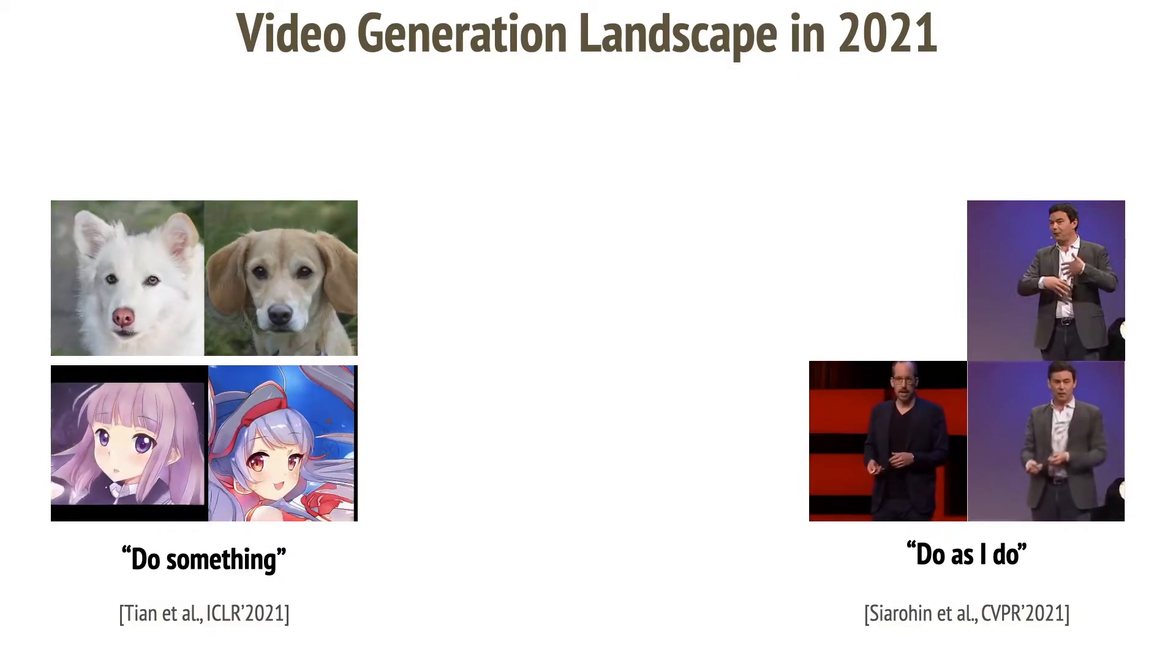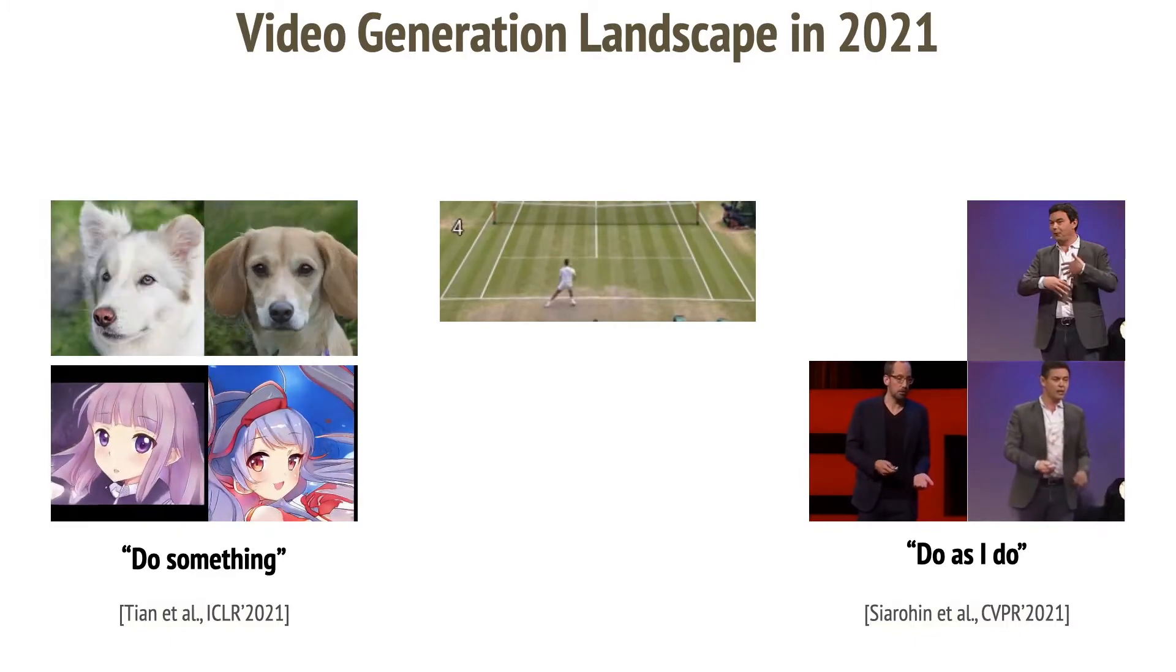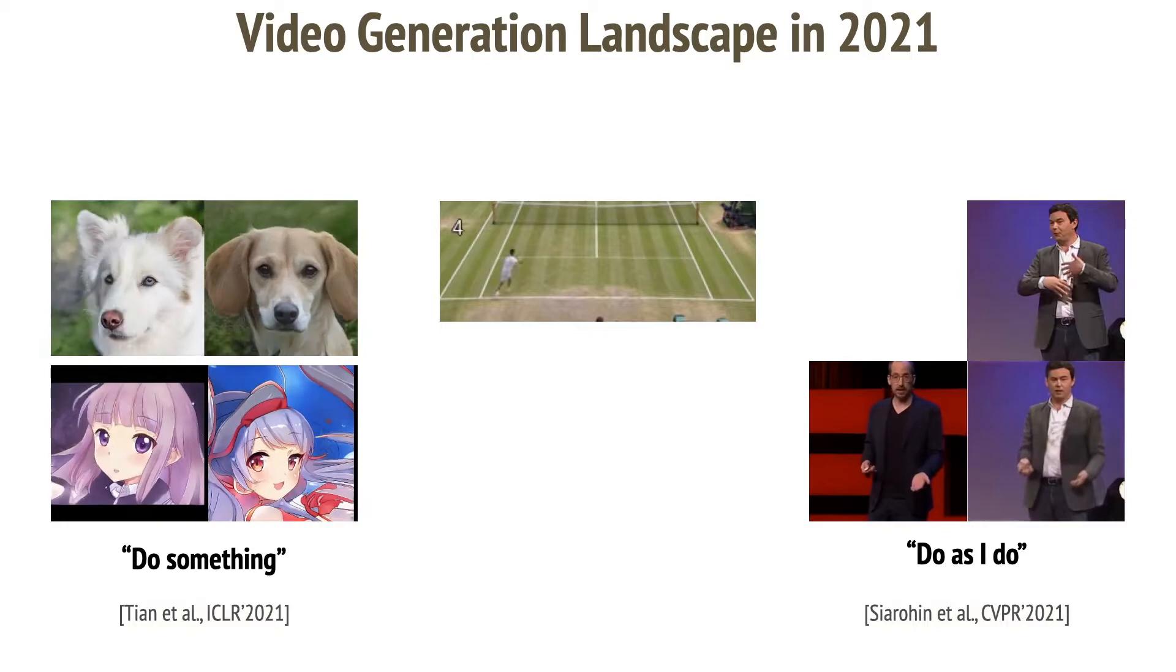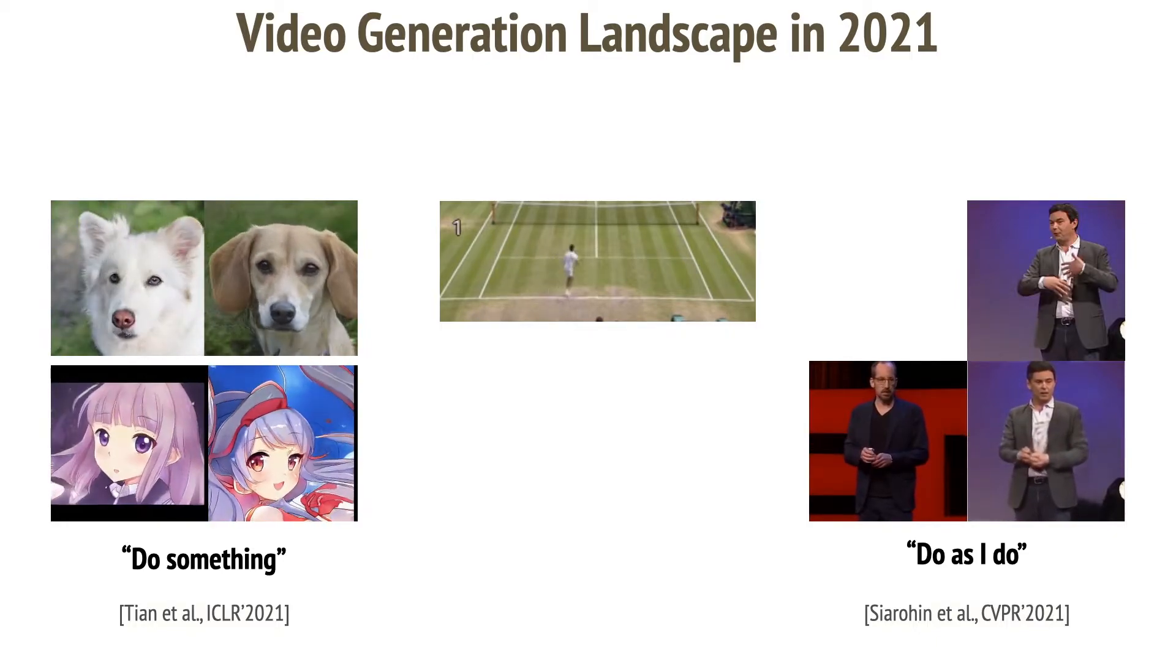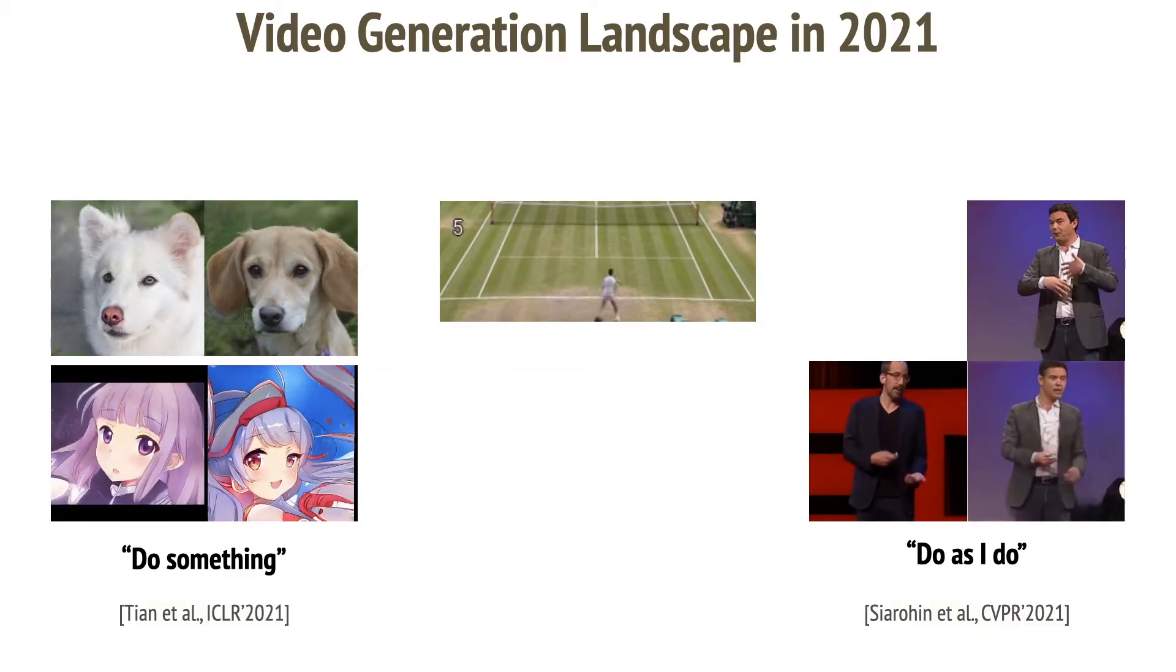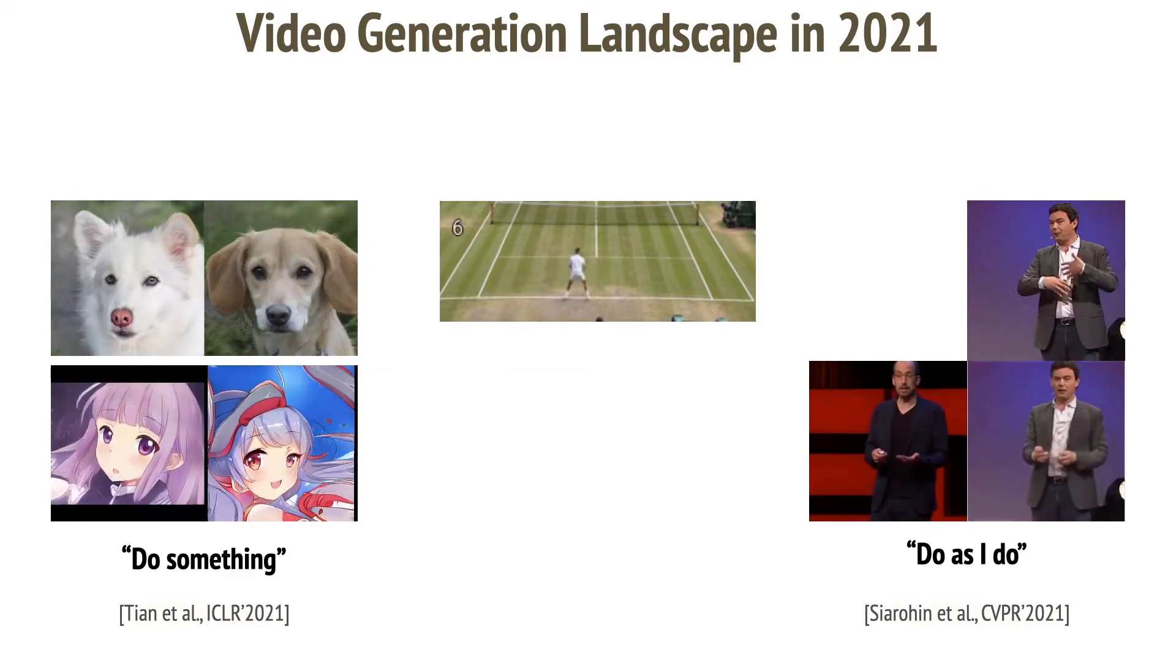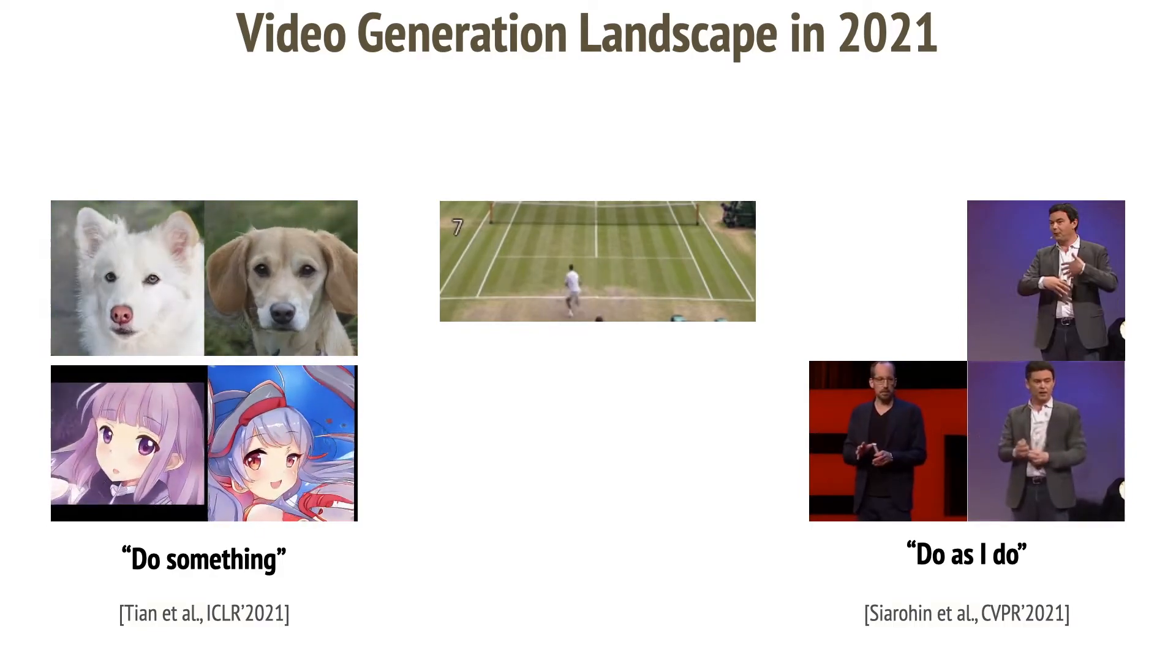In some cases, neither the driving video nor the random sequence solve the issue. Imagine we would like to move the tennis player where the ball will be. The do something approach won't help, as it does not control the motion. The do as I do techniques also do not provide a solution here, since for each situation in the game we need a corresponding driving video, which is problematic.